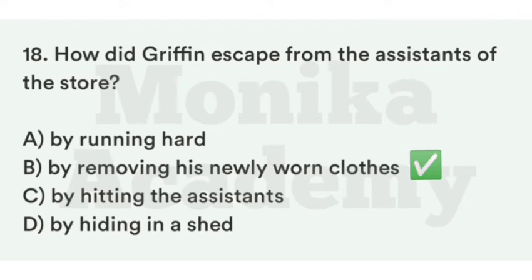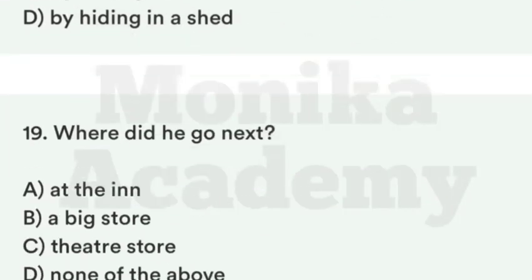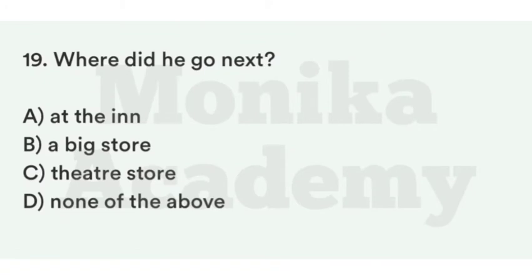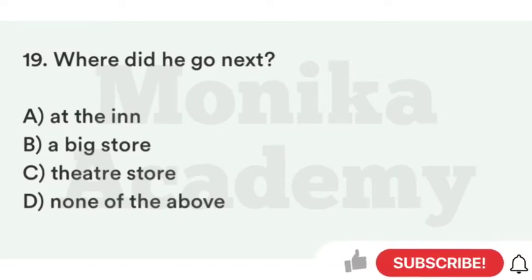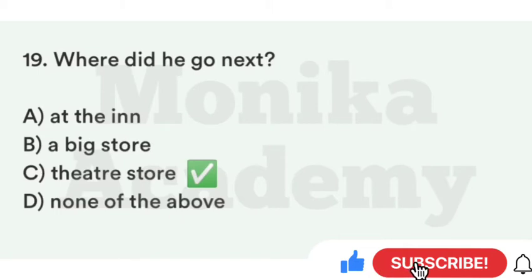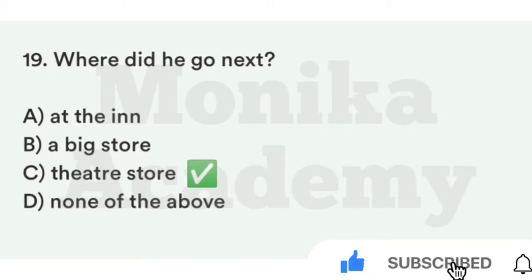Question 19: Where did he go next? Option A: At the inn. Option B: A big store. Option C: Theater store — जहाँ theater का सामान मिलता है. Option D: None of the above. The correct answer is C, theater store — Griffin London के store से निकलकर एक theater store में गया.